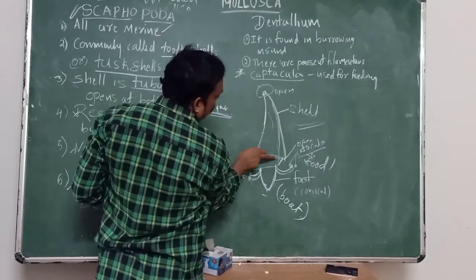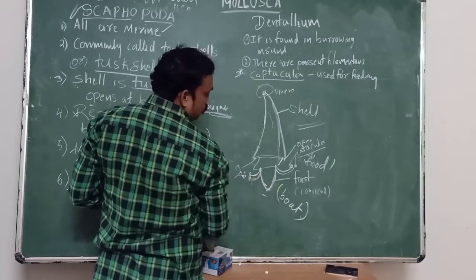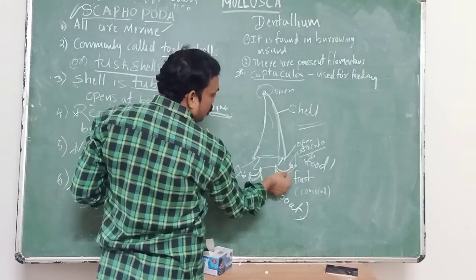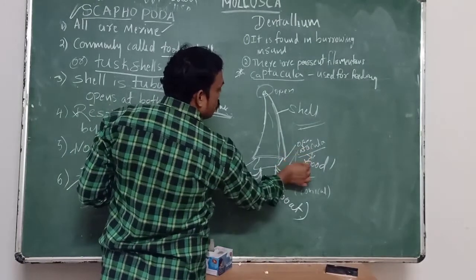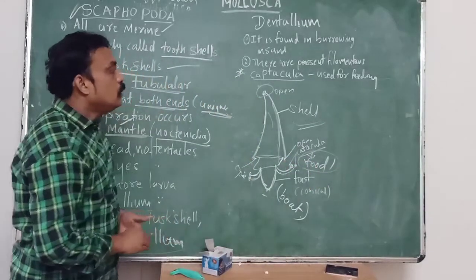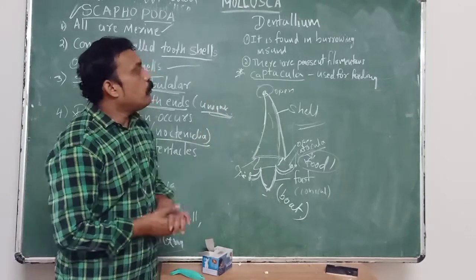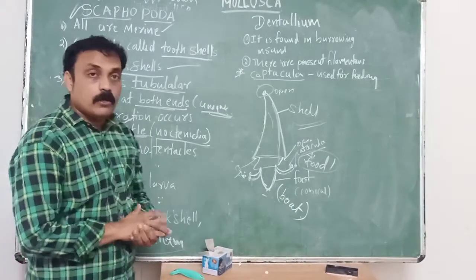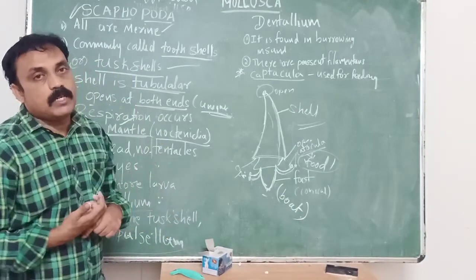In Dentalium, the shell opens at both ends. The mantle cavity is present, and captacula are attached, which are useful for capturing food and feeding. These are the important points about Scaphopoda. After Monoplacophora and Polyplacophora, the next class is Scaphopoda — take note of that.